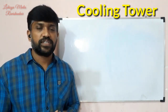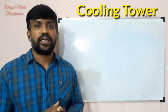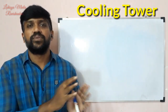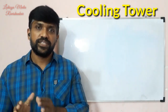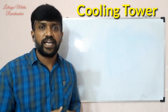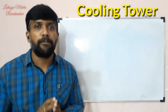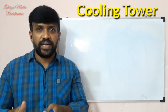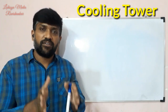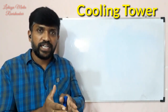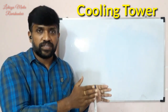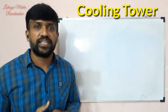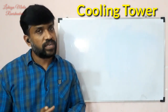The cooling tower is used with water-cooled chillers. A condenser is used in the cooling tower system. The heat is managed through the evaporator coil, and the cooling tower is used in the evaporator and the condenser. The heat is rejected through the cooling tower. This is the basic process of the cooling tower.